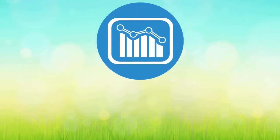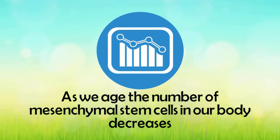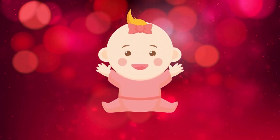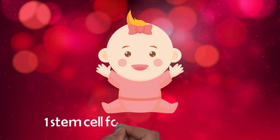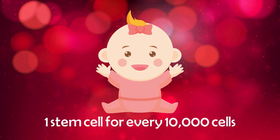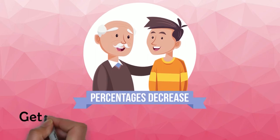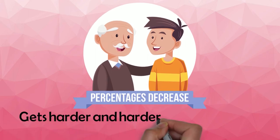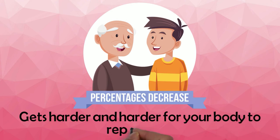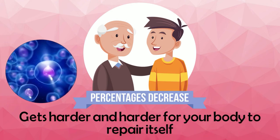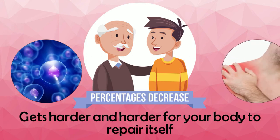One of the reasons your body may not be repairing itself is, as we age, the number of mesenchymal stem cells in our body decreases. When we are born, we have around one of these mesenchymal stem cells for every 10,000 cells. As we get older, the percentage of mesenchymal stem cells to other cells decreases. As percentages decrease, it gets harder and harder for your body to repair itself, because mesenchymal stem cells are what help our body repair injuries. If we have less mesenchymal stem cells, then we have less healing potential. This may be why your body does not heal or respond to treatments the way it did when you were younger.